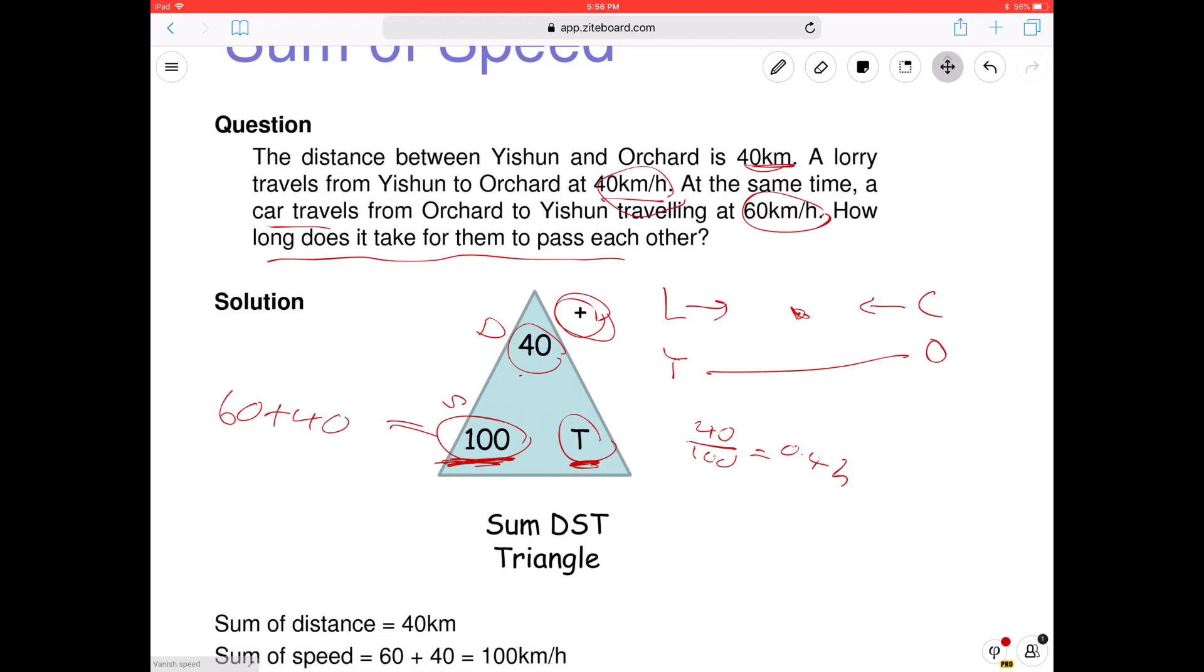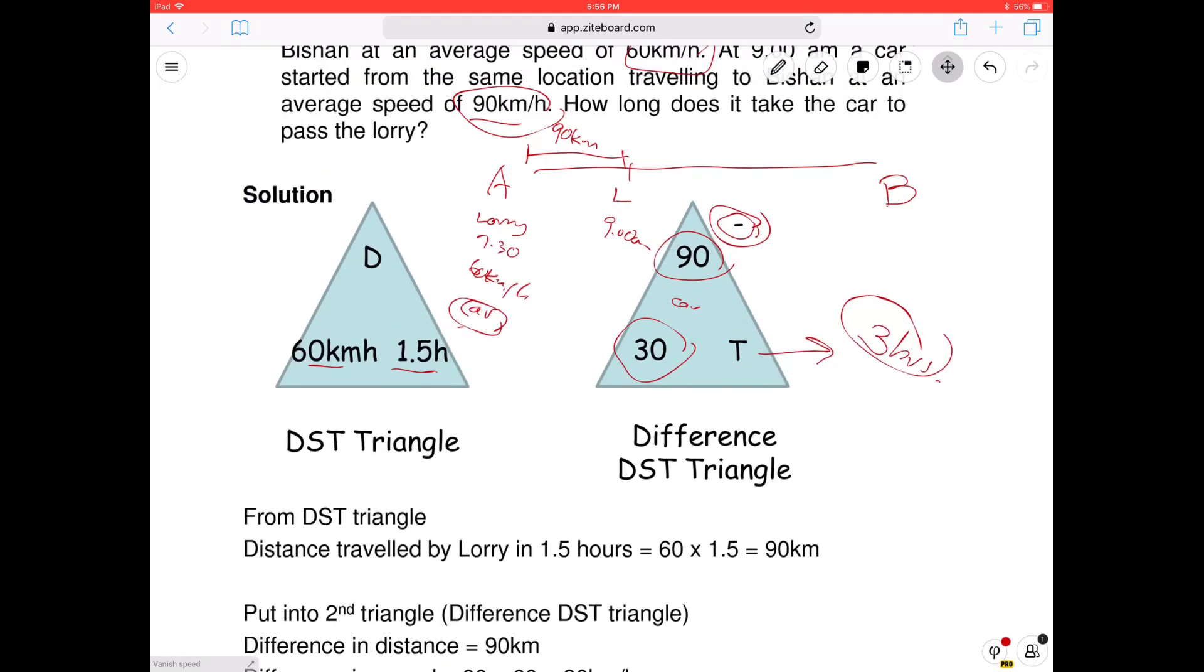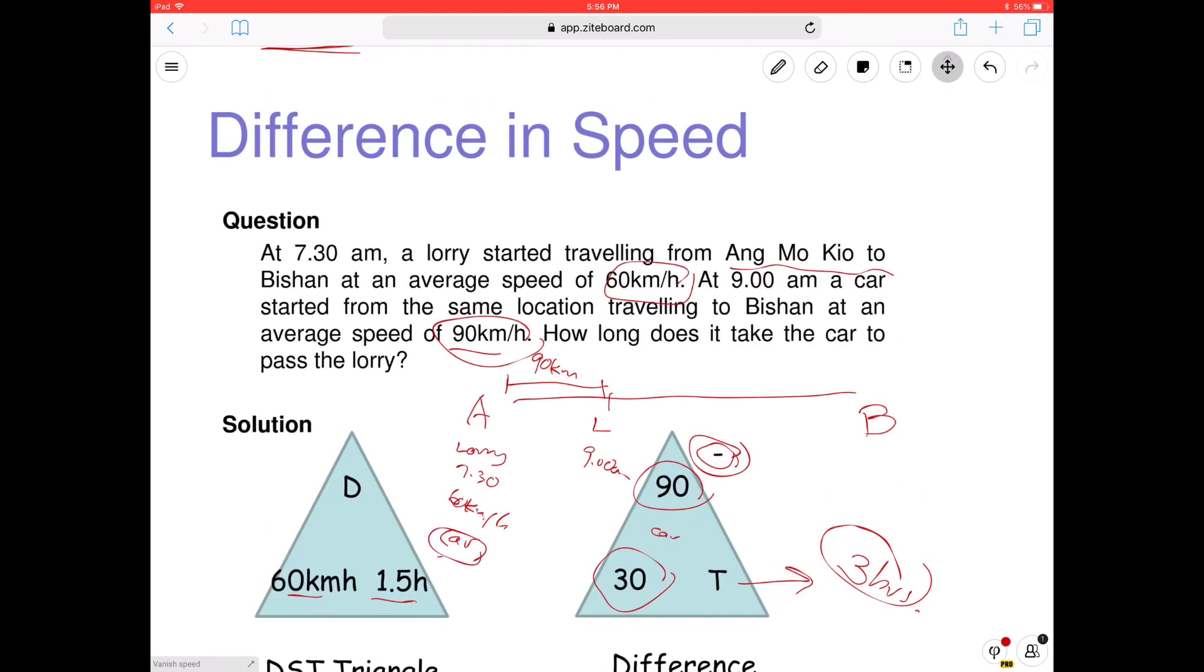So far do you understand DST minus DST plus? Can you tell me what is DST minus used for? Okay. What is DST plus used for? Why do you need to add their speed? Because we want to find when they come to a certain point to meet. That means they are travelling towards each other. Towards each other. So the plus usually is when they are coming towards each other. Okay. Then how about the minus? What is the minus for? The one they are catching up. Catching up. Yeah. Very good. Okay. So you must remember. Difference is catching up.